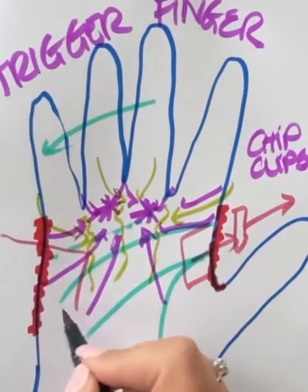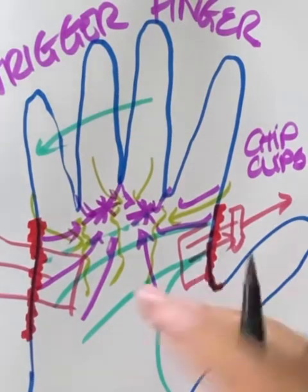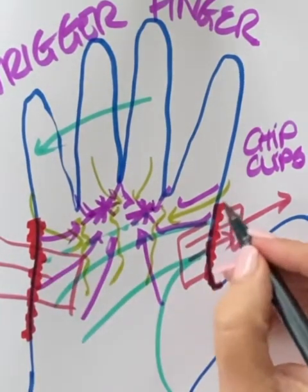Chip clip kind of going here that way. The skin is pulling that way, we're kind of opening up the area. You can even put them a little bit higher if you want to.